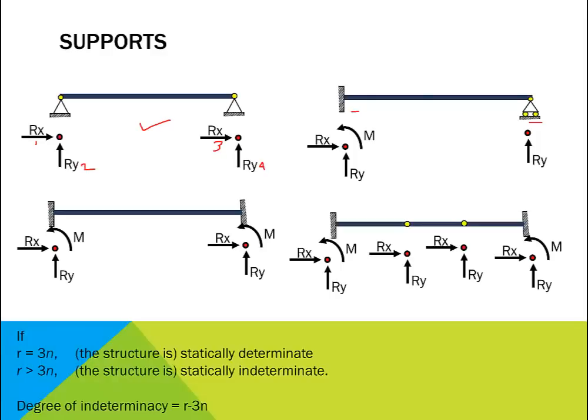If the beam has two fixed ends, there will be six unknown support reactions. The equations of equilibrium only give us three equations, so we need an extra three equations to solve all the unknown reactions. Such a beam is said to be three degrees indeterminate and requires an advanced analysis method to supply the extra equations.